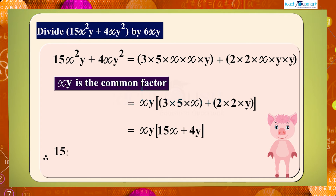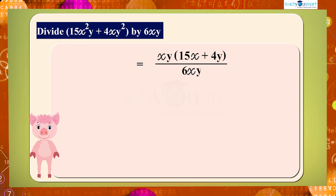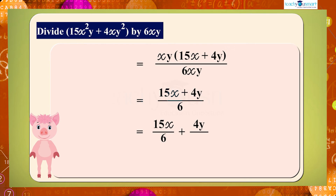Therefore, 15x squared y plus 4xy squared, whole divided by 6xy, equals xy multiplied by (15x plus 4y), whole divided by 6xy. By cancelling xy, we get (15x plus 4y) divided by 6, which equals 15x by 6 plus 4y by 6, equals 5x by 2 plus 2y by 3.